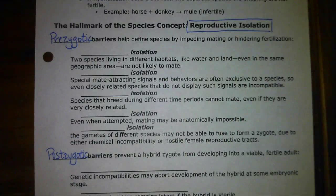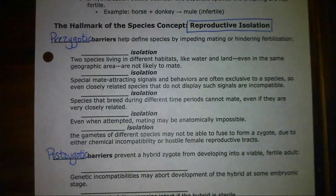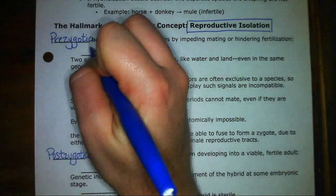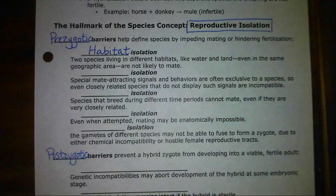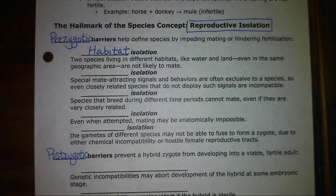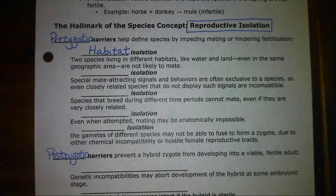Let's look at our prezygotic barriers — there are five different ones. The first one is habitat isolation. If two species are living in different habitats — water and land, or even as specific as on the forest floor versus up in the trees — then they might not reproduce, even if they would be able to if they were in the same habitat.